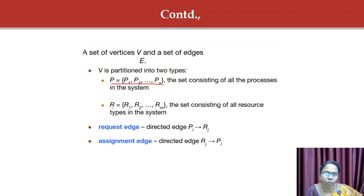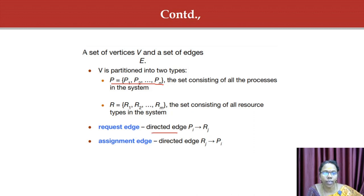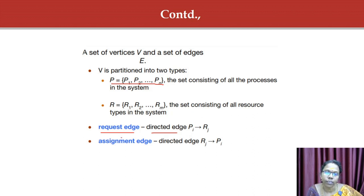Each resource type can have several instances: R1, R2, up to Rm. The graph describes how processes are allocated to resources. When a process requests a resource type, we establish a directed edge called a request edge. When a resource is allocated to a process, that directed edge is called an assignment edge.